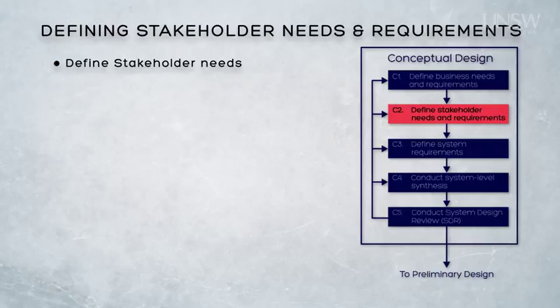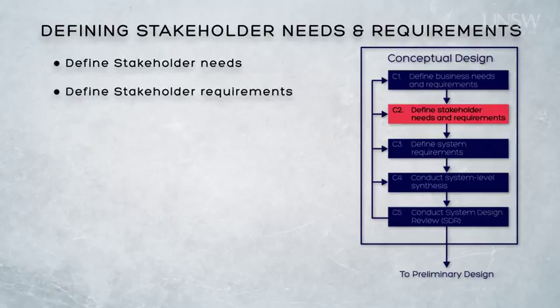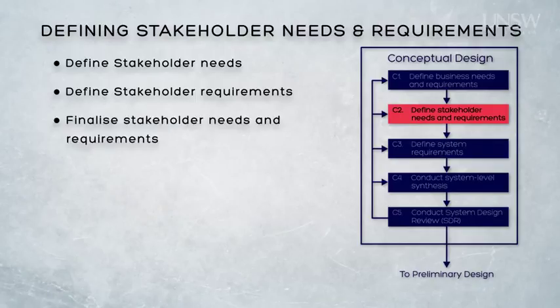And we have a business requirement specification that defines the agreed business requirements for the system. We now look to build on this work by using selected groups of more operationally focused stakeholders. These stakeholders are more on the coalface, so to speak, and are able to look over the business needs and requirements and give them a more refined feel. To acknowledge the refinement process, we are going to call the resultant work the stakeholder needs and requirements.